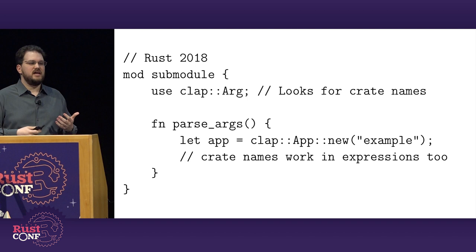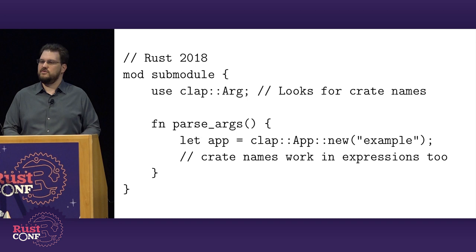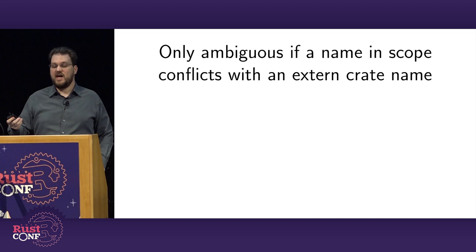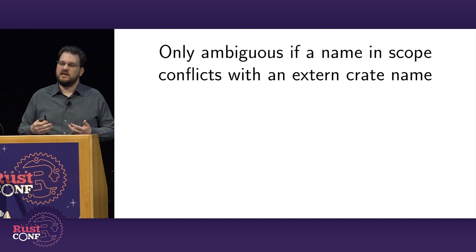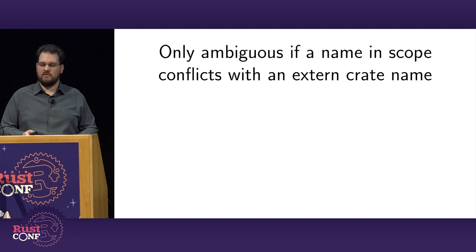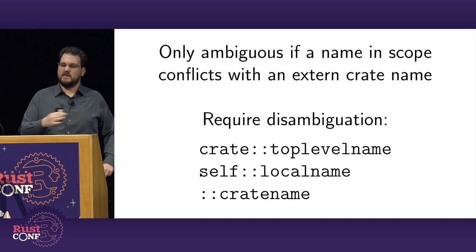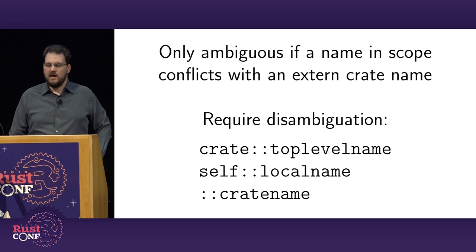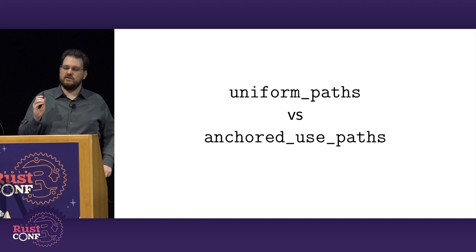This does introduce a kind of search ambiguity — do you have a local variable named 'clap' or a crate named 'clap'? But it's only ambiguous if a name in scope conflicts with an extern crate name, which doesn't come up that often. There is a way to disambiguate: if you have the same name for a crate and a module and a variable, you can still write 'crate::' to reference your own top-level names, 'self::' for module-level names, or a leading '::' to say it's definitely an external crate.